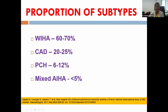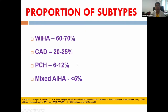Looking at the proportions of different subtypes: warm AIHA accounts for 60 to 70 percent of cases, cold agglutinin disease for 20 to 25 percent, and paroxysmal cold hemoglobinuria for 6 to 12 percent. A small subset of less than 5 percent can have a mixed type.